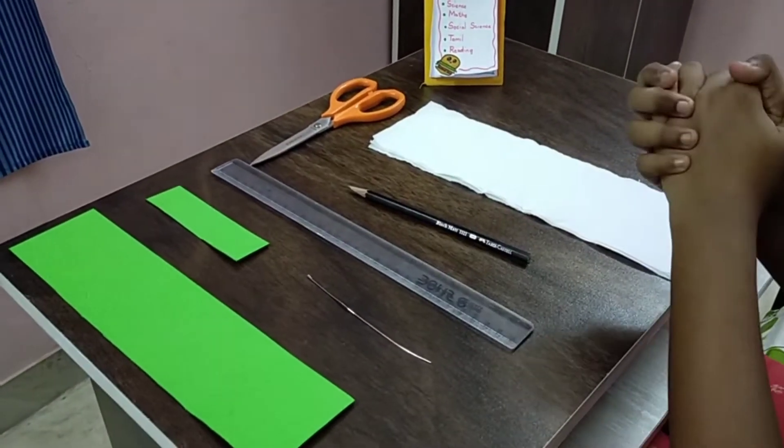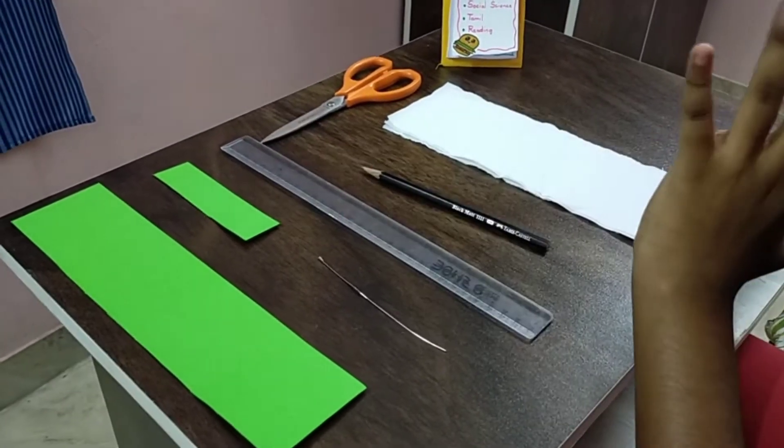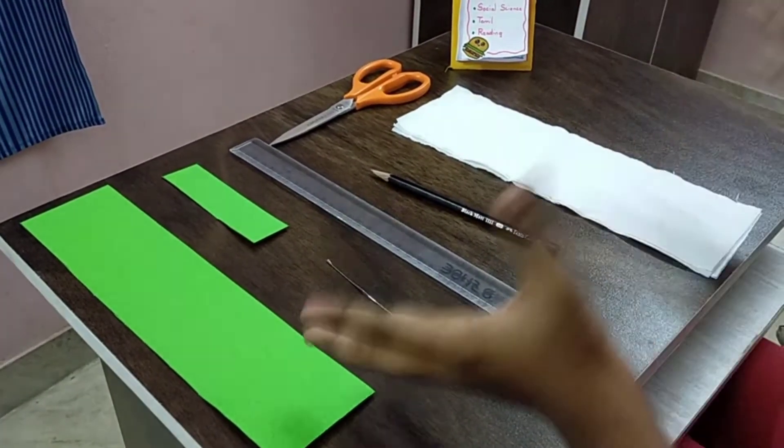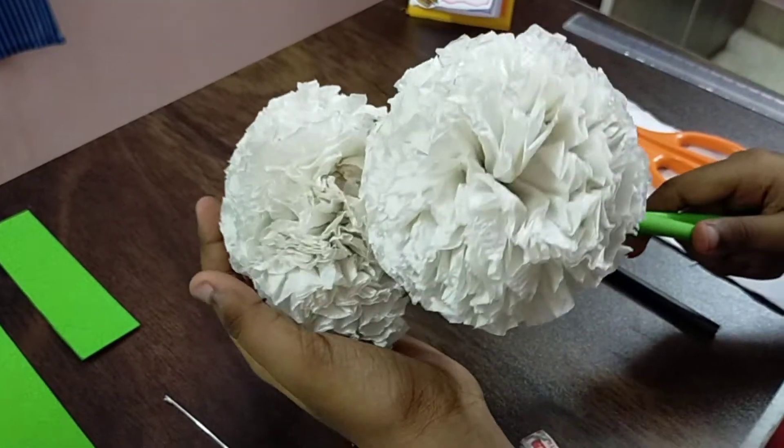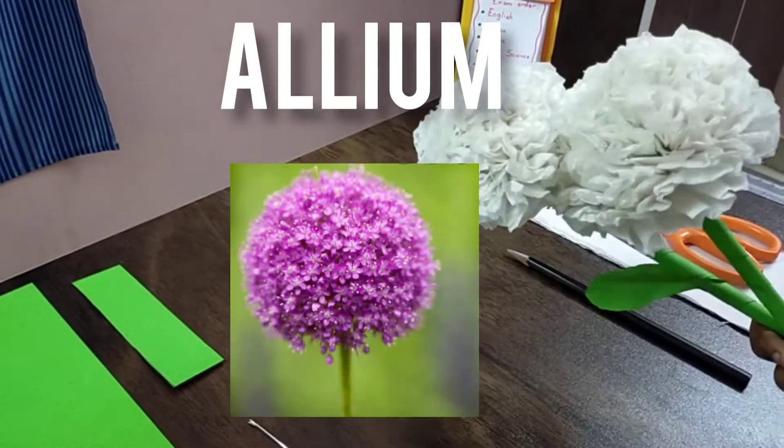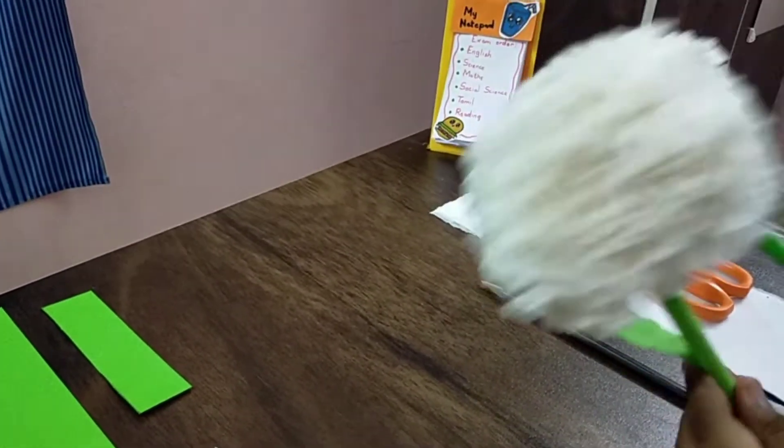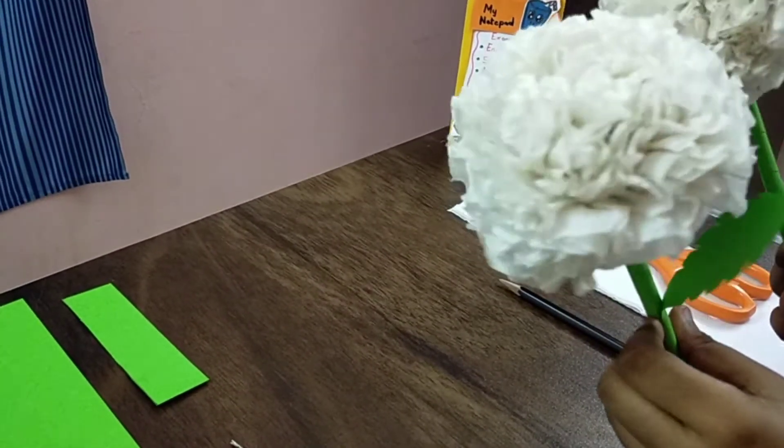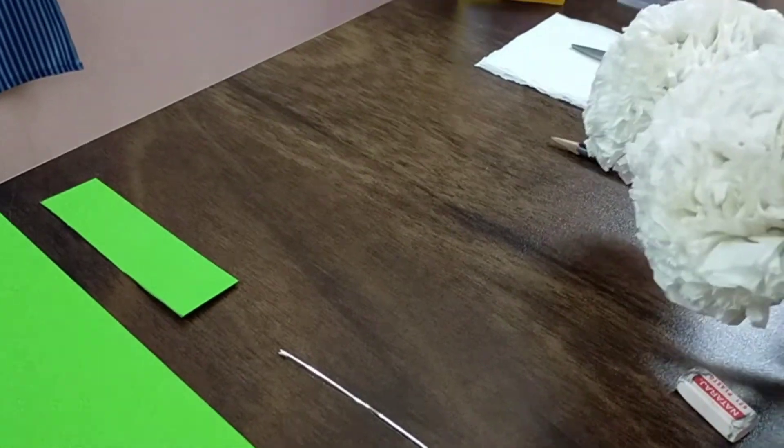Hey there, welcome back. Today I'm going to be doing a tissue paper flower. It's a fluffy and large type of flower. Let me show you. So this is how the flower looks like - it's round and fluffy. There's a flower called Allium, it's actually purple, but I'm going to be using white. I love the way how fluffy it is, so I'm going to be doing this. Let's get going.